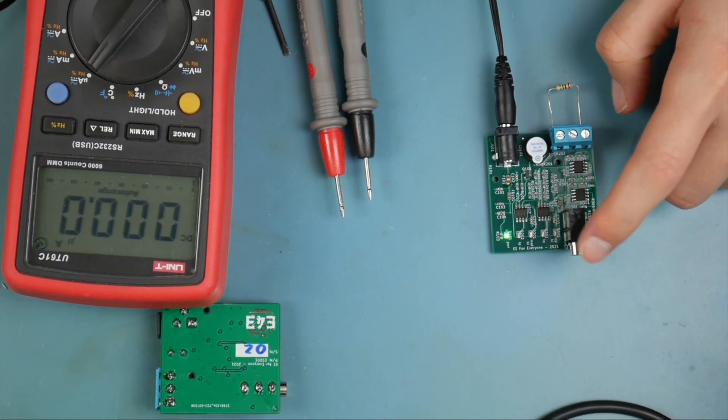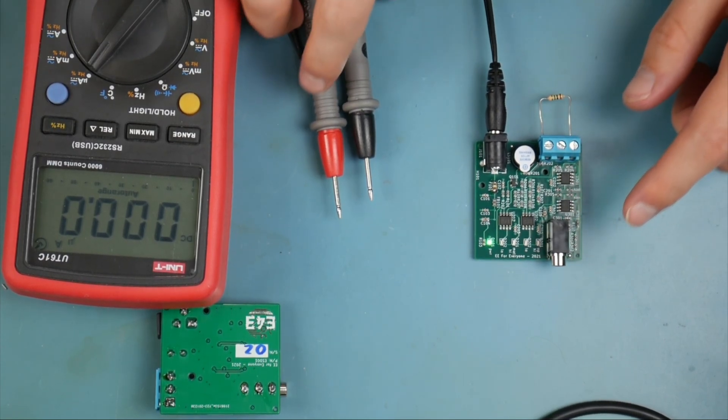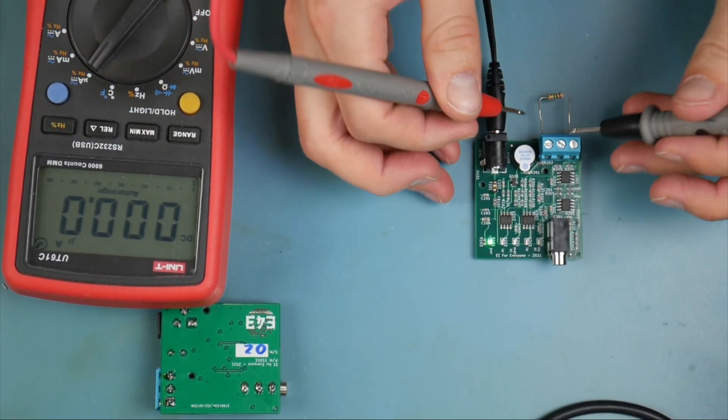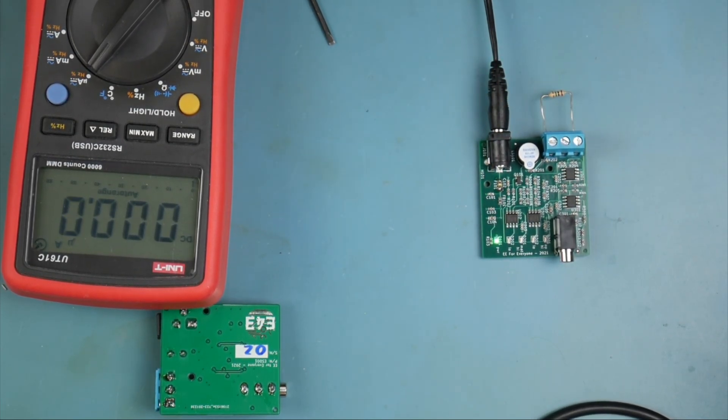This should have a short circuit protection as well. So when we short this out, we're supposed to trigger the low error. However, why didn't we?